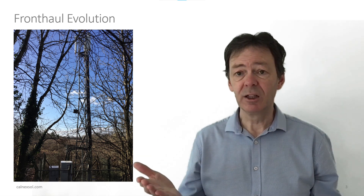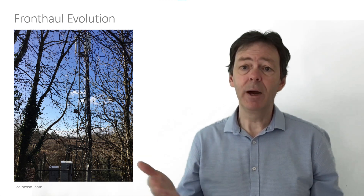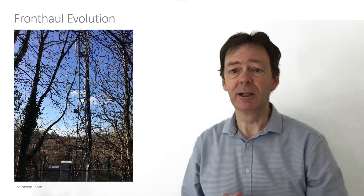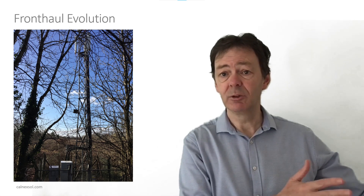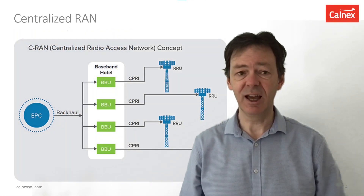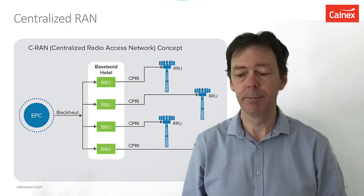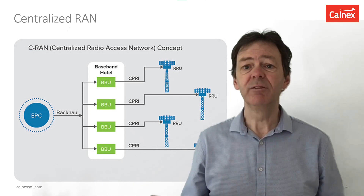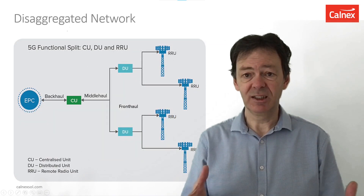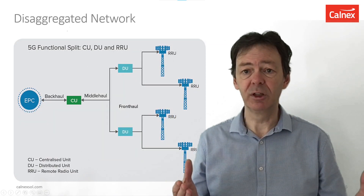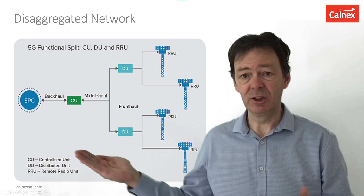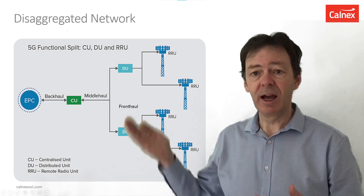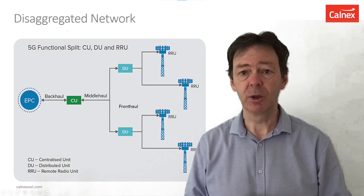Then people realised that because it's a fibre interface, the baseband unit that was at the foot of the cell tower could actually be moved into a nearby data centre — it didn't have to be right next to the cell tower. With 5G we've gone even further, and the base station itself has been disaggregated into three parts: the centralised unit, the distributed unit, and the radio unit at the top of the cell tower.